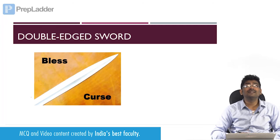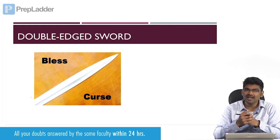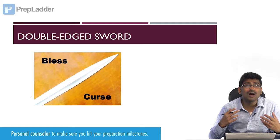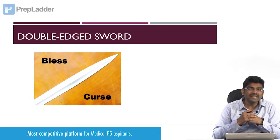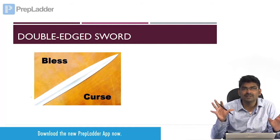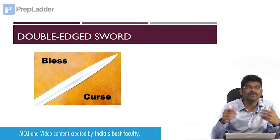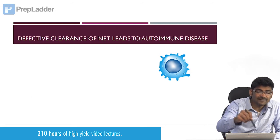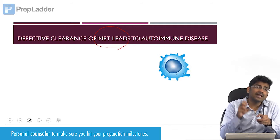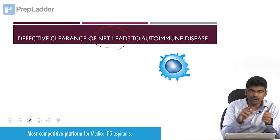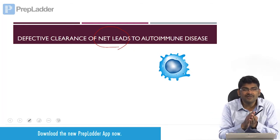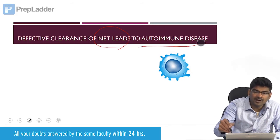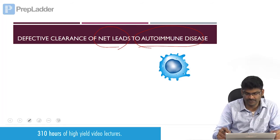This process, NETosis, is a double-edged sword. We know that the immune system is good for our health, but it can also produce autoimmune reactions. Aberrant activation of NETosis will lead to autoimmune disorders. Defective clearance of NETs — which need to be cleared by cells like macrophages — means our nuclear material is exposed, anti-nuclear antibodies will be produced, and this is also a reason for autoimmune disorders.